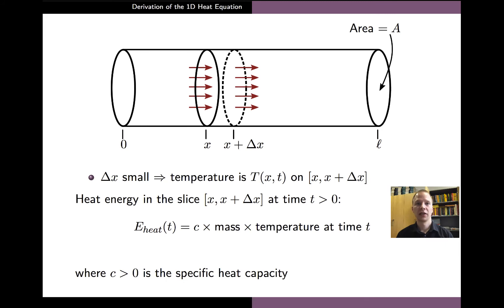We begin the derivation by considering a slice of the metal rod extending from the spatial coordinate x up to x plus delta x. And here we assume that the width delta x of the slice is so small that the temperature in all of the slice is roughly constant and equal to the temperature T(x,t).